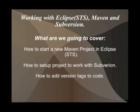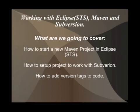So working with Eclipse or STS with Maven and Subversion — what I'm going to go over quickly in this video is: how to start a project in Eclipse and STS, how to set up the project to work with Subversion, and how to add version tags inside your code so that your code will actually have all the Subversion information. That way, if you make Javadocs from it, all your Subversion information will be inside of it.